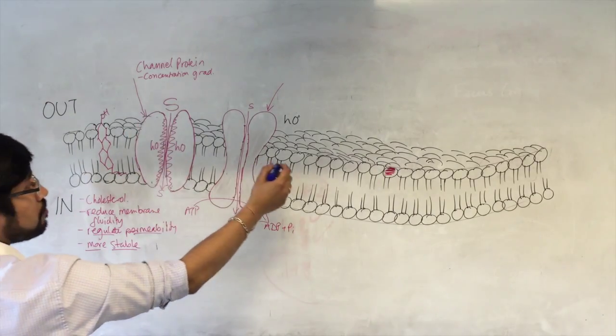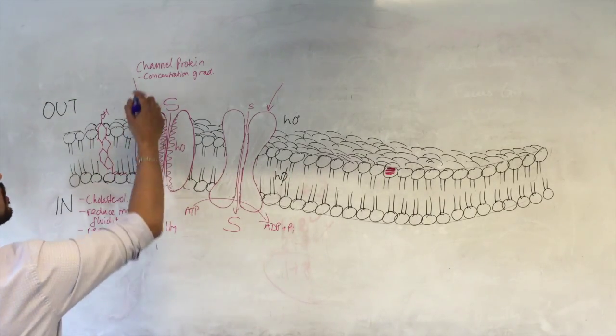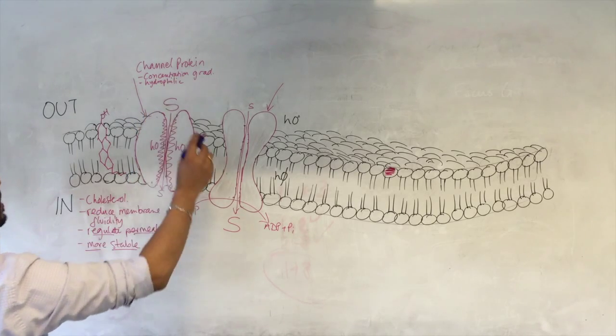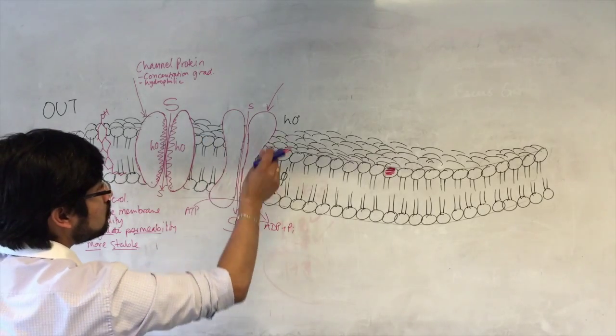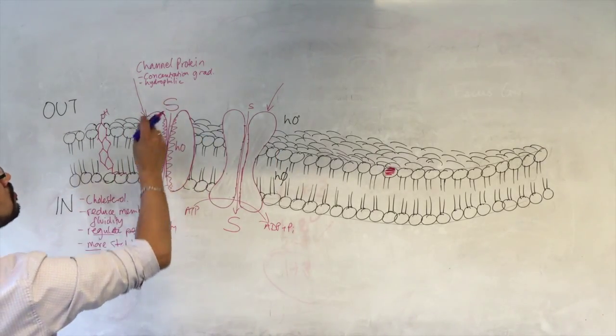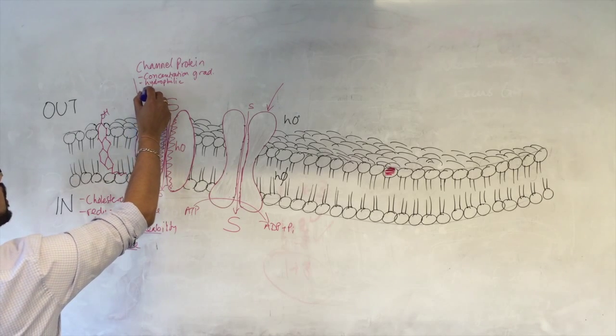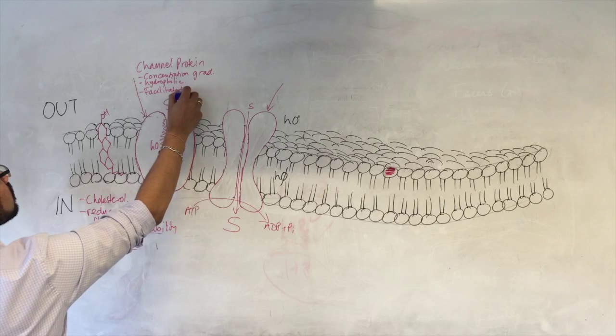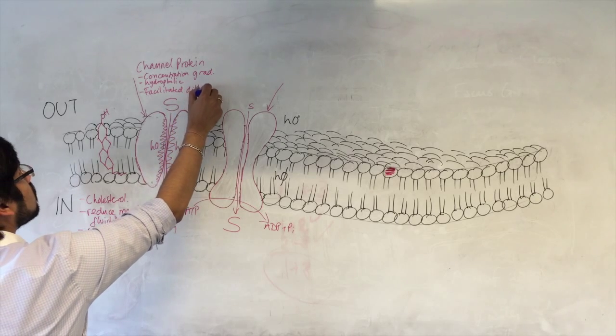Things that are hydrophilic and cannot move directly through the membrane, these channel proteins allow them to move down their concentration gradient, and we call this facilitated diffusion.